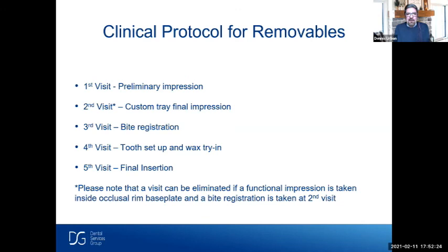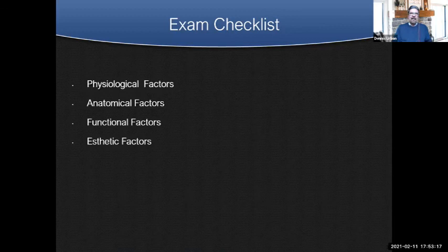We're going to go through each protocol: first visit with the preliminary impression, second visit with a custom tray final impression, third visit for occlusal registration and bite registration, fourth visit for tooth setup and wax try-in, and the final visit for insertion of the denture. You can potentially eliminate one visit if a functional impression is taken inside the occlusal rim base plate — so you can do an impression and a bite registration at the same visit. If you have an existing denture, you can also take a wash impression and a new bite registration and save a visit.